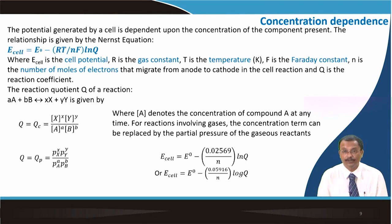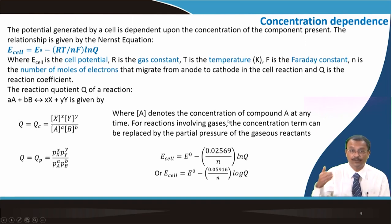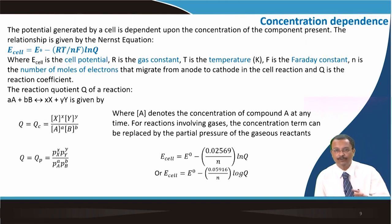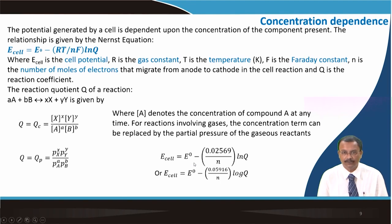For a generalized equation where A and B react to form X moles of X and Y moles of Y, we can estimate the reaction quotient Q. The concentration term [A] denotes the concentration of compound A at any time; for gases, the concentration term can be replaced by partial pressure. Using the Nernst equation, we can always estimate the cell potential.